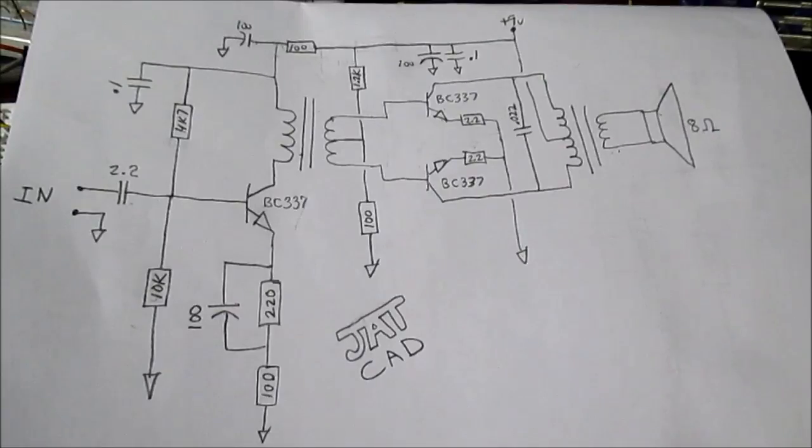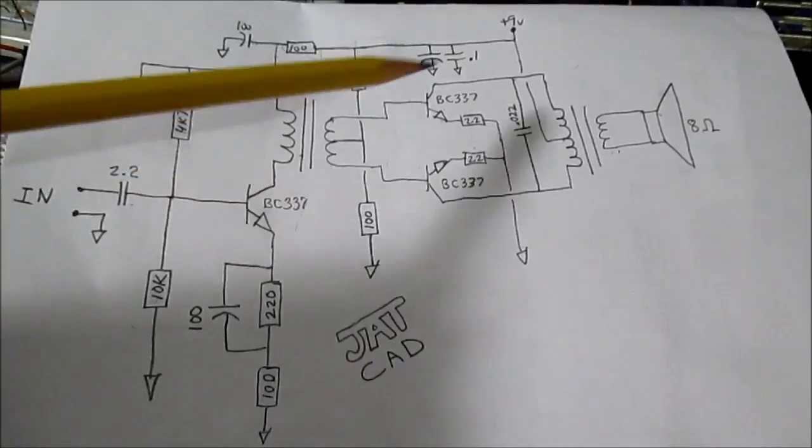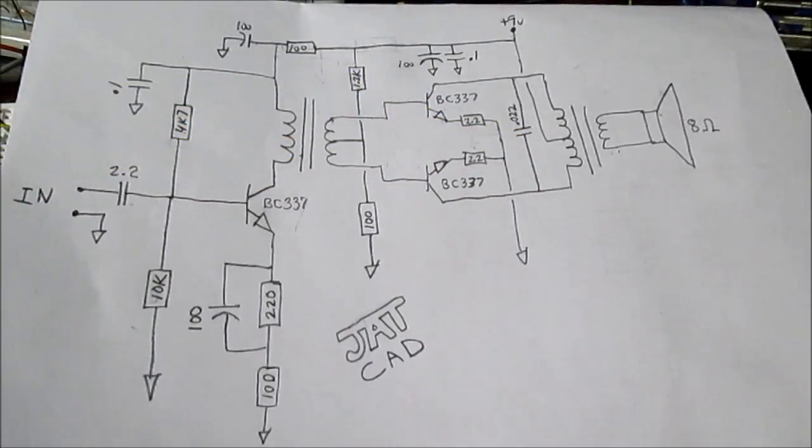First of all I'm going to start with a very simple amplifier design used in smaller devices like a transistor radio. It's a transformer coupled push pull type amplifier stage. It has two transformers and these are used in lower power devices, usually one watt or less. These are used in everything from transistor radios, tape recorders and players, and other devices that needed low power audio output.